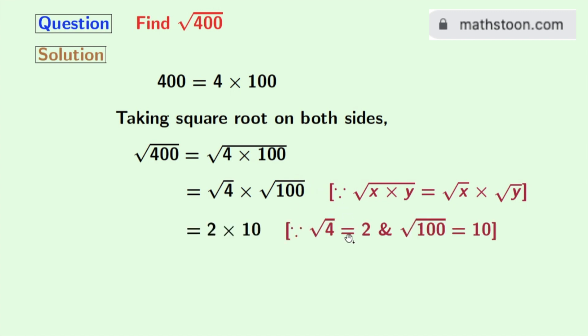As square root of 4 is 2 and square root of 100 is 10, so we have this is equal to 2 times 10. After multiplying this, we get 20. And this is the value of square root of 400.